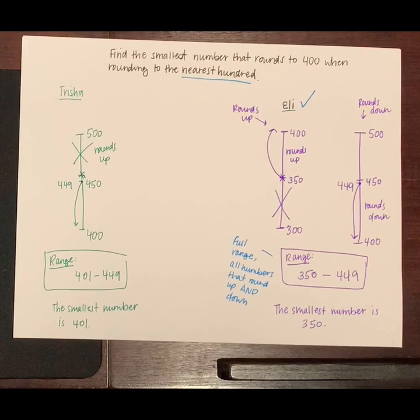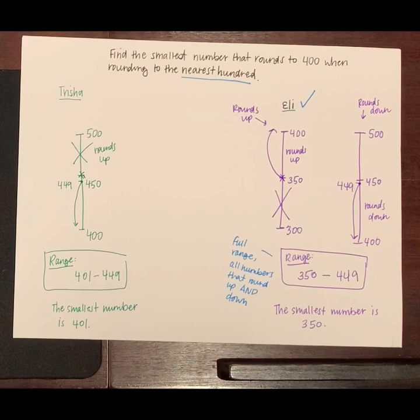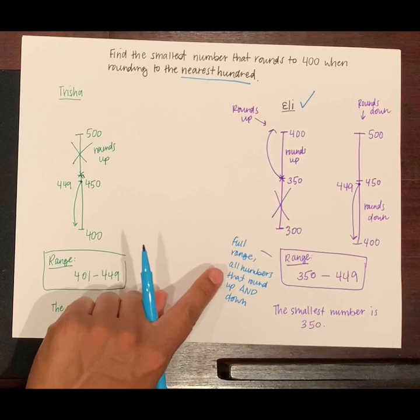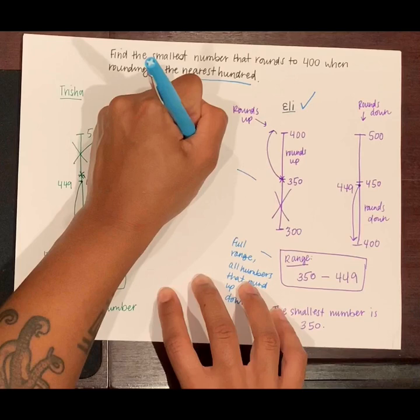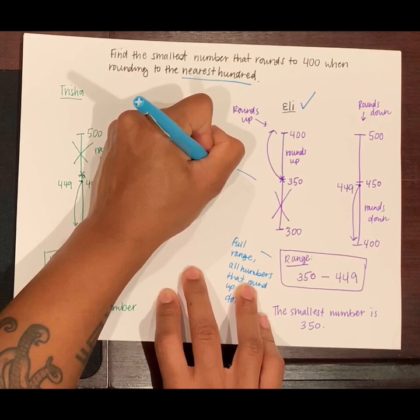Yes, that's right. I heard friends say they're going to make sure they include the full range of numbers, all the numbers that round up and down to their given number by using two number lines to show the numbers that round up and the numbers that round down.